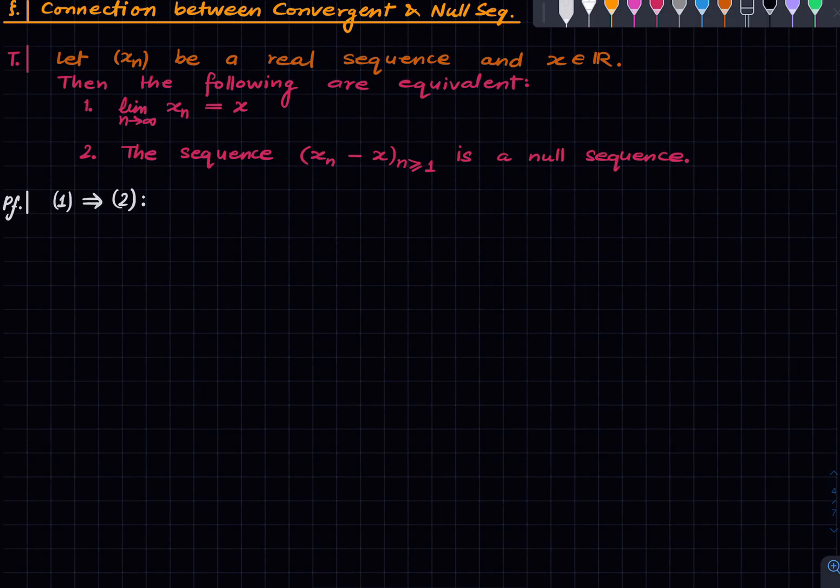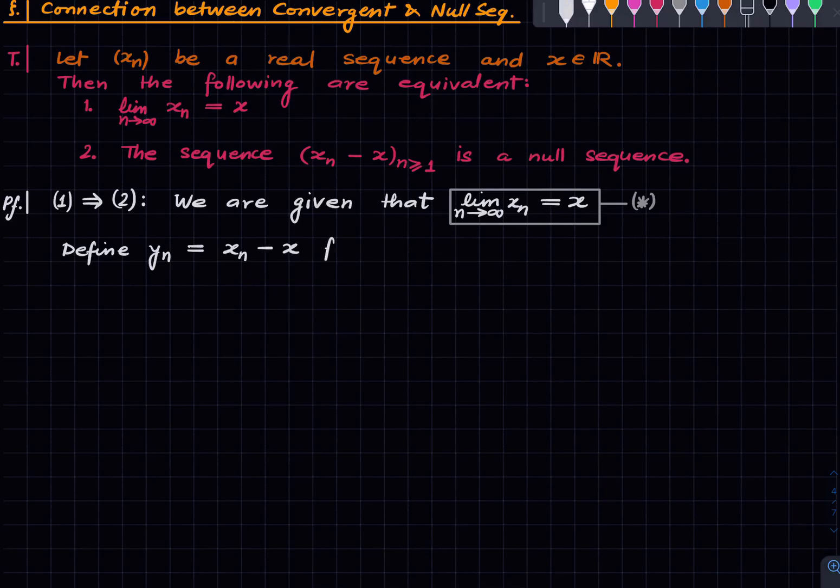What we are given: we are given that limit of xn as n approaches infinity is x. We'll refer to this as star. And define yn as xn minus x for all n. Now the problem is to show that this thing is a null sequence. We want to show that this sequence is a null sequence. Let's unravel this: that is, we want to show that yn converges to zero as n approaches infinity.